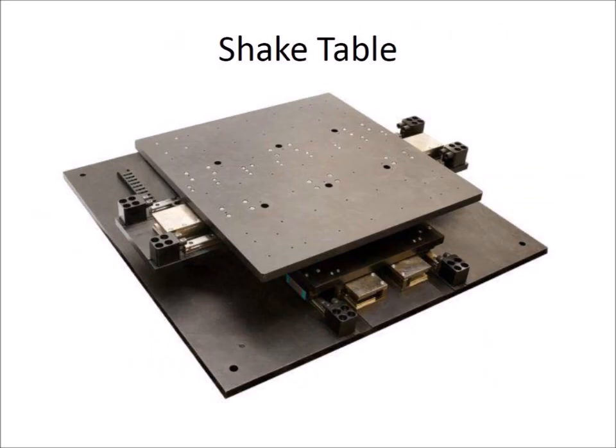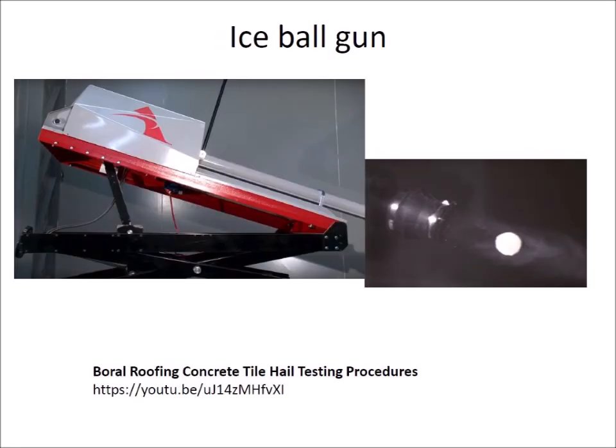Shake tables are available commercially, and many universities use them to test the performance of engineering structures during earthquakes. The use of a shake table to liquefy samples of saturated sand from the Carolina Bays may eliminate the need to add clay to the experimental target mixture. Ice ball guns are used commercially to test the strength of automobile glass, solar panels, and roof tiles during hail storms. Guns capable of accurately firing ice projectiles of various sizes and at various angles and speeds would be much better than a slingshot. This type of equipment is necessary to increase the scale of the impact experiments beyond the desktop models.